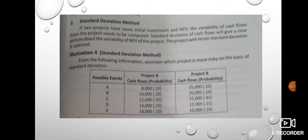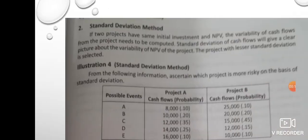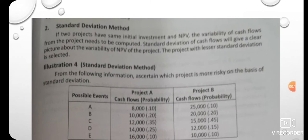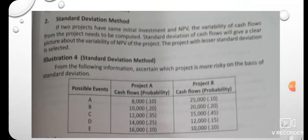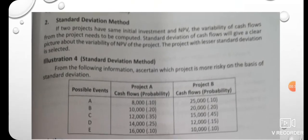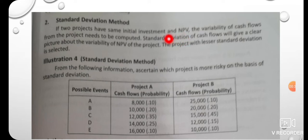We are going to discuss some problems using the standard deviation method. If two projects have the same initial investment under NPV, the variability of cash flows from the project needs to be computed. If we compare two projects with the same initial investment and the same net present value, this is very difficult to compare. We will discuss the variability of cash flows.